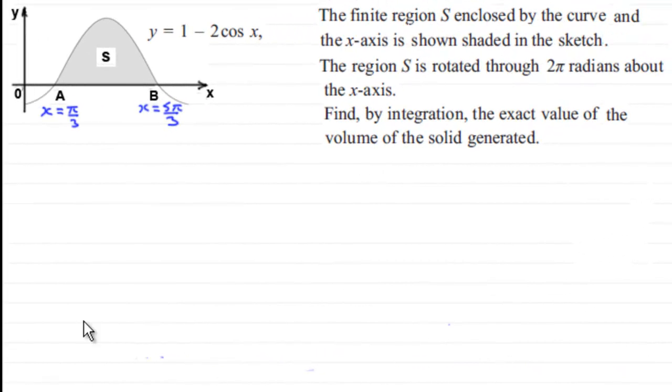Hi. Now we're given this sketch of the curve y equals 1 minus 2 cos x, where x is measured in radians. We're shown this finite region S enclosed by the curve and the x-axis between the points A and B, with x-coordinates x equals pi upon 3 and x equals 5 pi upon 3.